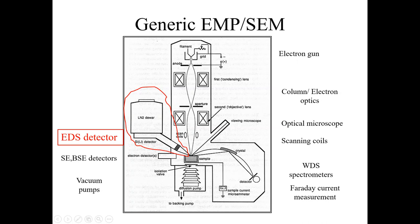Here you can see where the EDS detector has been employed in an EMPA or scanning electron microscope. Just as you have observed the internal structure of a scanning electron microscope — the electron beam coming from a filament through a grid and lenses to the sample — among the signals produced from those interactions, we also have characteristic X-rays. For those characteristic X-rays, we have the EDS detector. The most common type is called the silicon-lithium detector, which is attached to the EMPA or SEM.